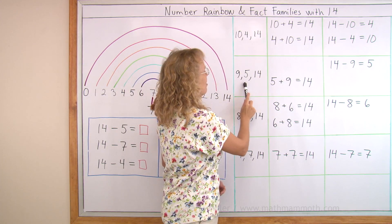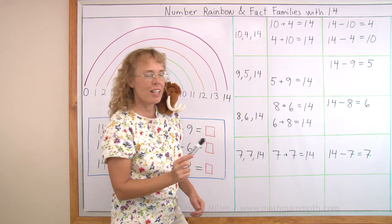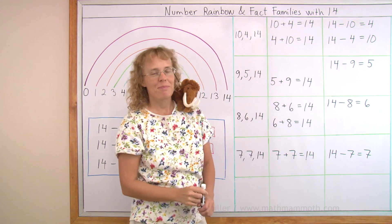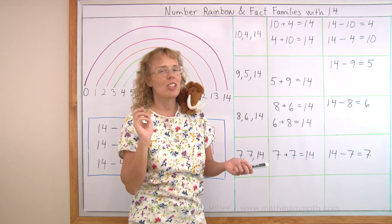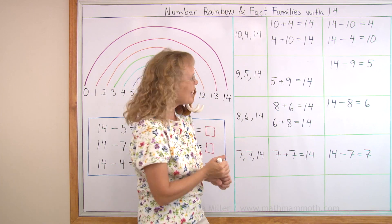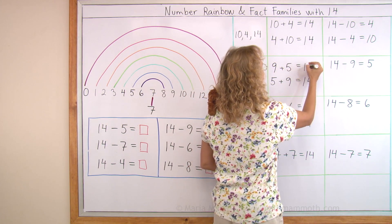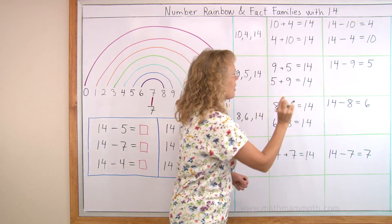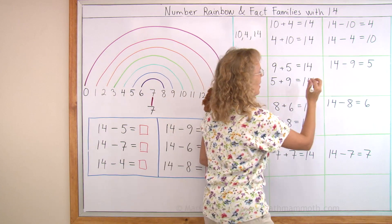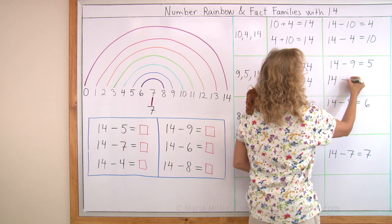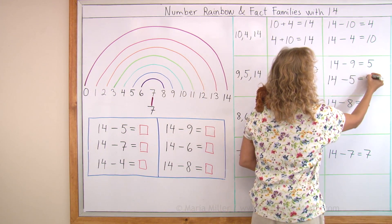The next one, 9 and 5 makes 14. What addition is missing here? You should know this by now, this should be real easy by now, right? It is 9 and 5 making 14. And what subtraction is missing there? Start with 14 and then take away 5 leaves 9.